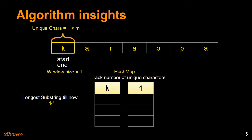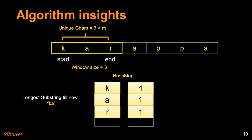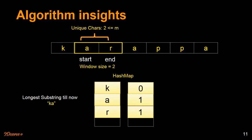As soon as we move the pointer, we update the hash map with the new character and move the end of the window. Now we have two unique characters, the window size is two, and the longest substring is 'ka'. We move forward to 'r', update the hash map, move the end pointer — window size is three but unique characters is three, which is greater than M. So we do not update the longest substring; it remains 'ka'. At this point we move the start pointer forward and remove it from the hash map, so 'k' count becomes zero.